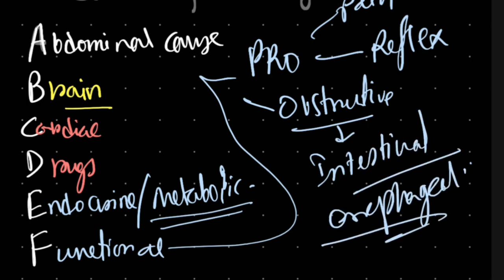Pyloric stenosis, an abdominal cause we discussed earlier, can also cause obstruction and induce vomiting. These are the causes of vomiting you should keep in mind when examining a patient who presents with vomiting. Use this mnemonic to reach your diagnosis. Thank you for watching.